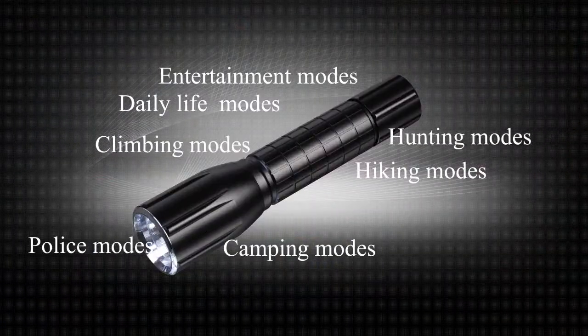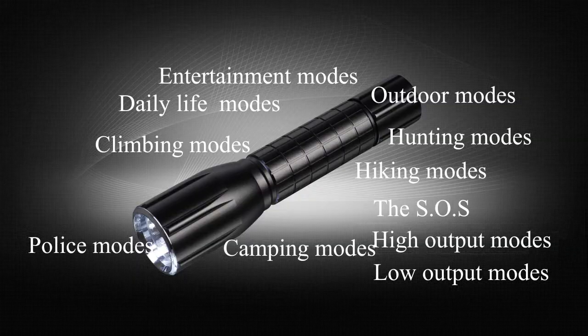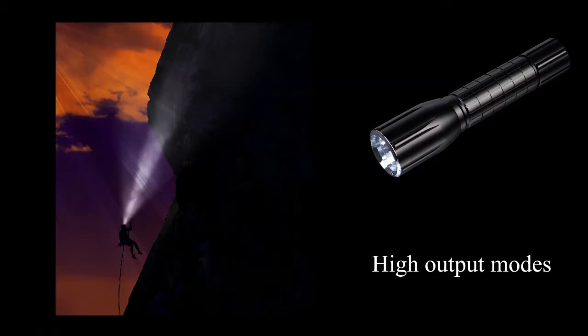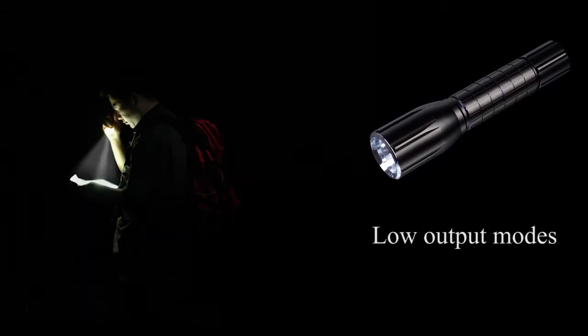Various modes enable flashlights to be used for different applications. High output modes can be used for outdoor activities such as running and hiking, while low output modes can be applied for camping and review.